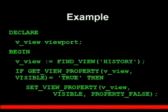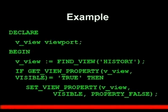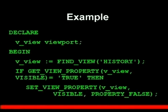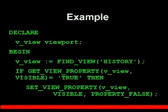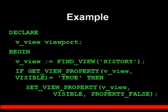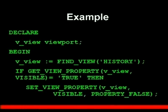Here's a good example of turning canvases on and off. Say we have a history canvas — like audit columns, which you might call 'history' for the users. First we use FIND_VIEW to get the ID of the history canvas and store it in the variable vView. Then we use GET_VIEW_PROPERTY to get the visible property for the canvas whose ID is vView. If that's true — if it's visible — then we set the view property for that canvas's visible property to false.